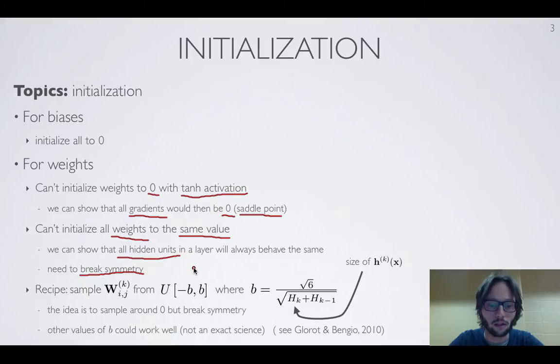And so the recipe that people usually follow is that they're going to sample stochastically the initial value for all the weights. And one thing that we propose here is to use a uniform distribution in some interval minus b to b, so around centered at zero. And the value that's suggested that we propose here is the square root of 6 divided by the square root of the sum of the number of units in layer k and number of units in layer k minus 1.